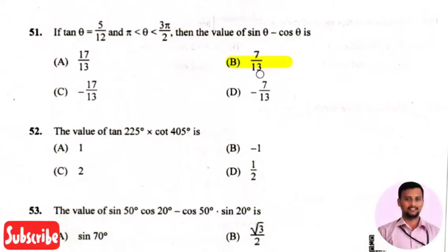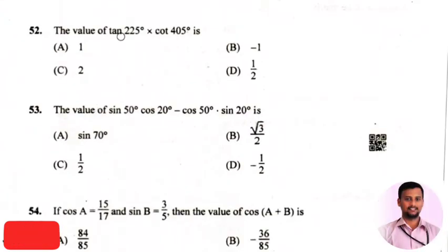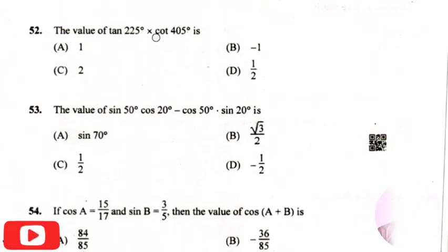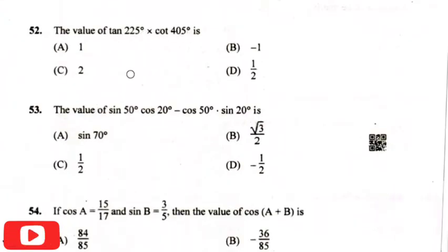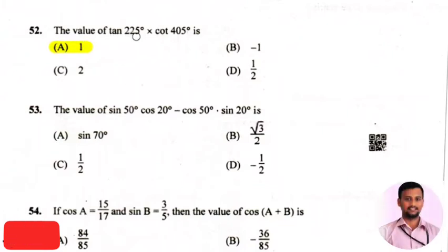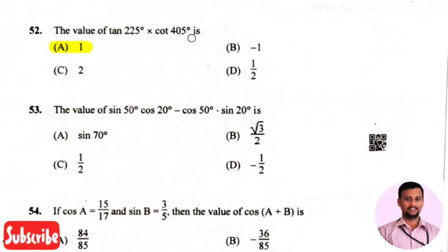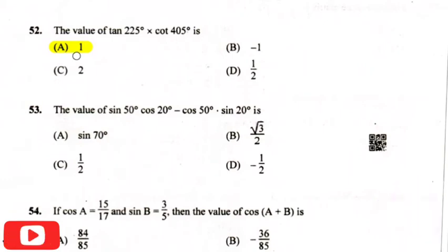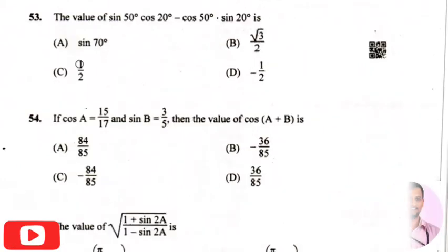The next question is the value of tan 225 into cot 405 — the right answer is option one, so the value of tan 225 into cot 405 will be equals to one.